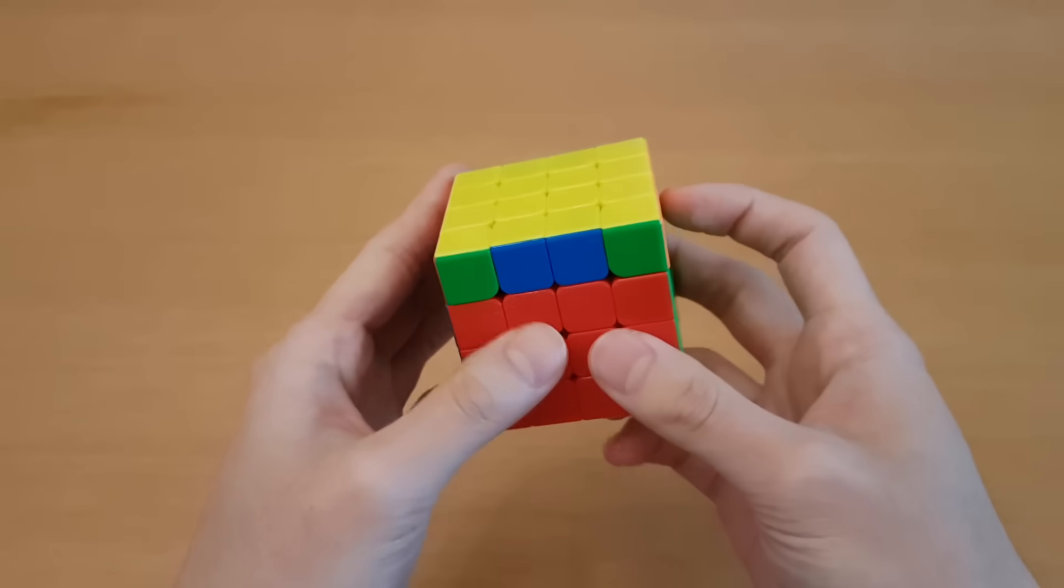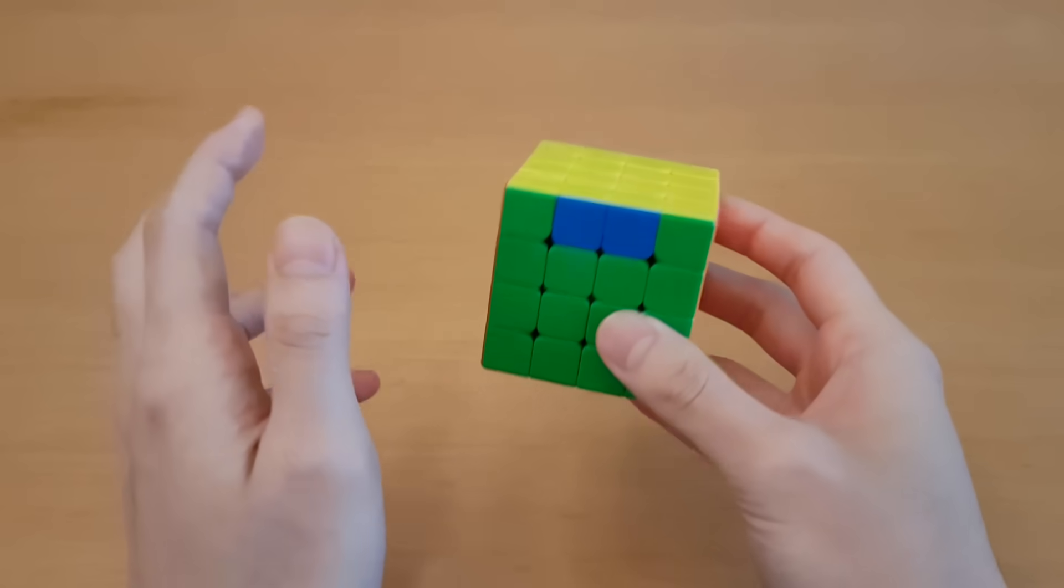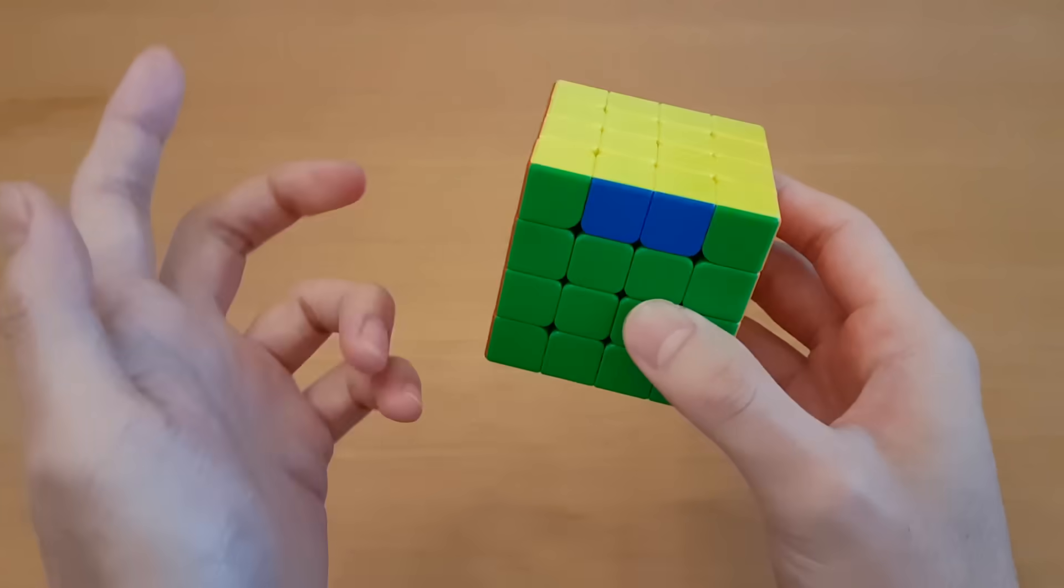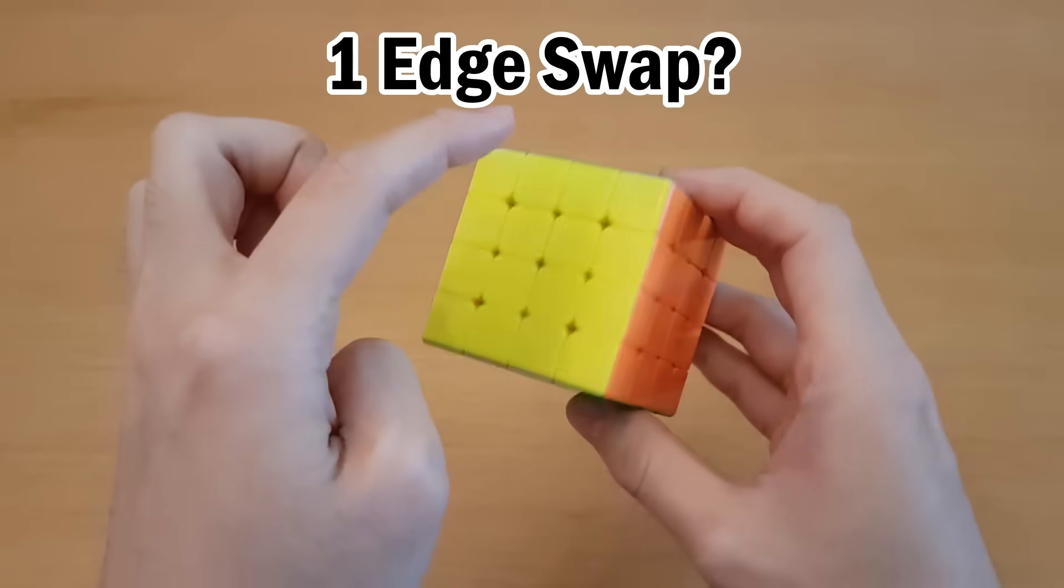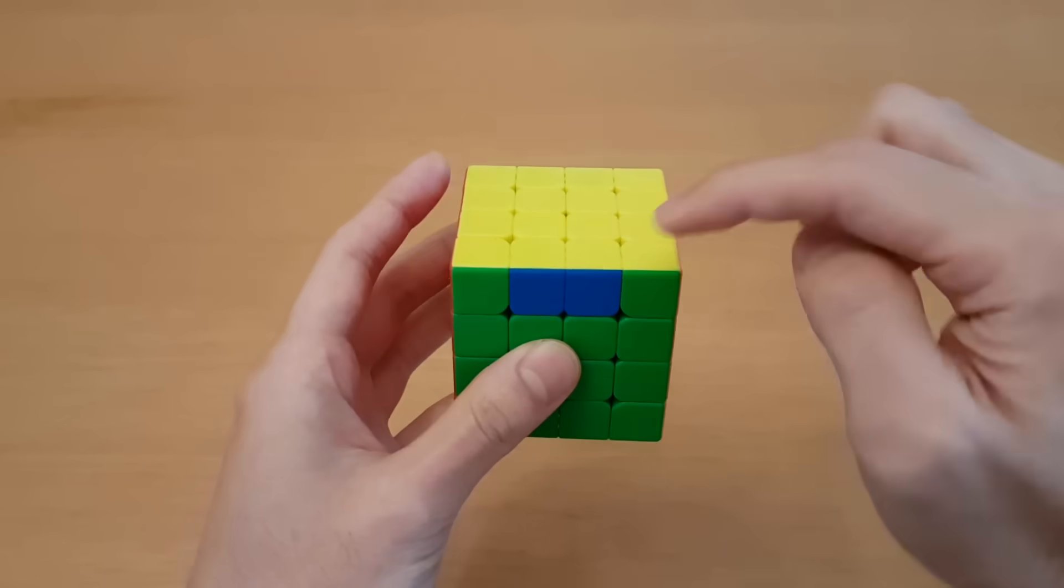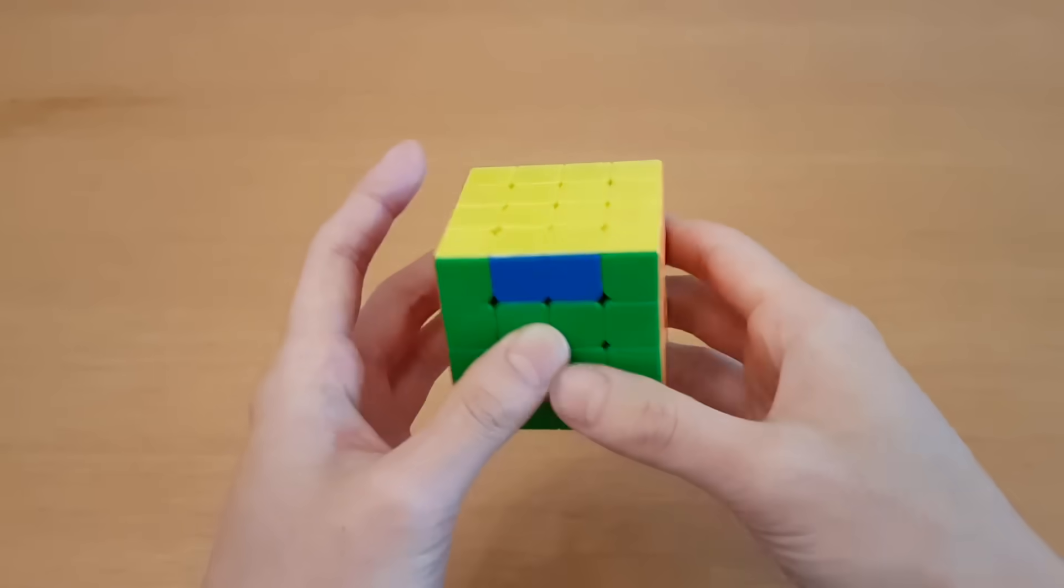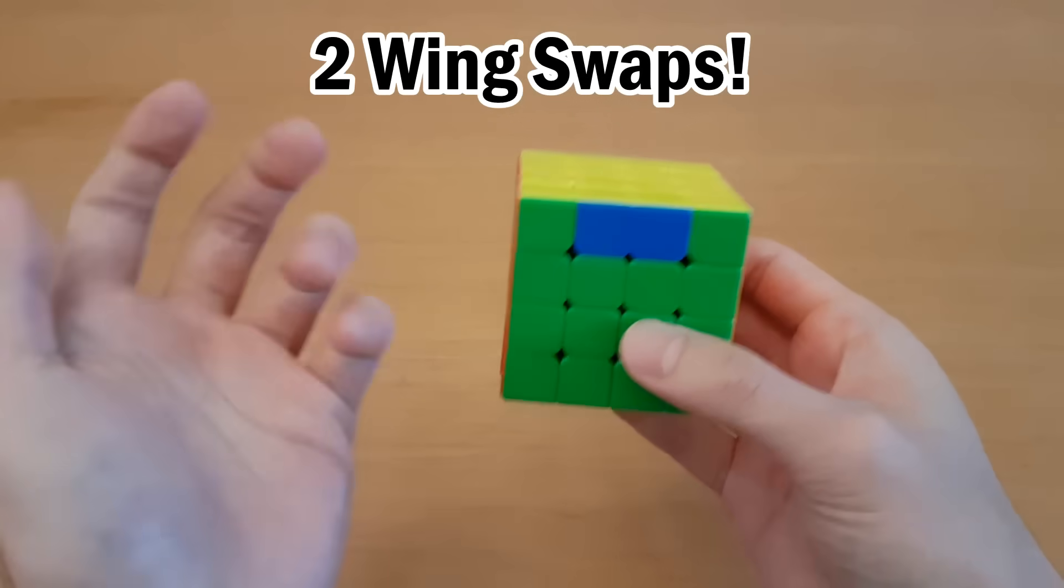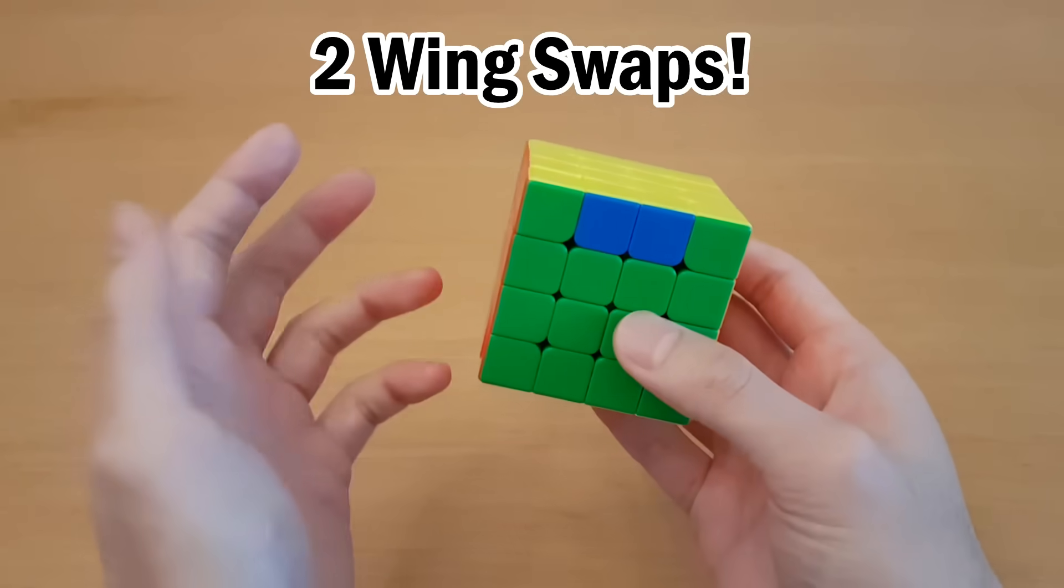Oh no, I've run into another type of parity. Or is it? You may have heard this before, but PLL parity is not really parity. It looks like parity on a 3x3, because I have one swap of edges. But if you consider them to be wings, you actually have this one needs to go here, and this one needs to go here. And these two also need to swap. So that's two swaps of wings, which is an even parity. That's why people don't call this a real parity. Because parity usually refers to odd parity.